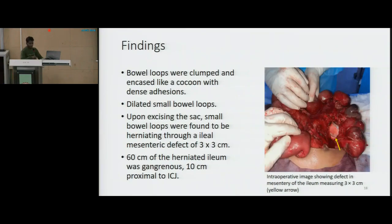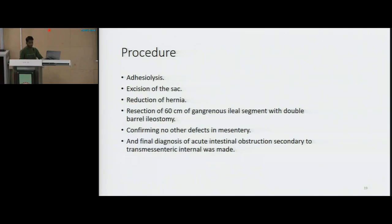The herniated bowel loops also showed gangrenous changes, as visible here. There were no other mesenteric defects found, and no mesenteric lymphadenopathy was evident during the intraoperative period. We proceeded with resection of 6 cm of gangrenous small bowel 10 cm proximal to the ileocecal junction, and a double-barrel ileostomy was made. Peritoneal lavage was given, two drains were placed, and fascial closure with skin and subcutaneous tissue was completed. A final diagnosis of acute intestinal obstruction secondary to transmesentric internal hernia was made.